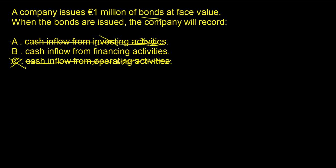Financing activities is the correct answer, because financing activities are related to how we get capital to run our business and how we return capital. A company issuing a million euros of bonds is raising capital — they could have issued equity or bonds; either one is a financing activity. It's how we get capital into the business using debt or equity. So B is the correct answer.